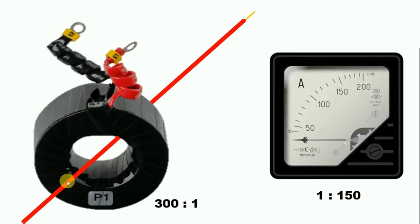It is converting 300 ampere into 1 ampere. Now we connect these two wires with the two terminals of the ammeter at the back side. From these two wires, 1 ampere current flows.